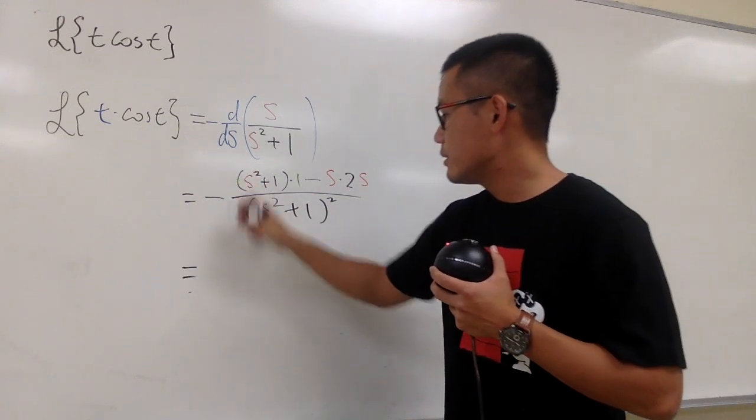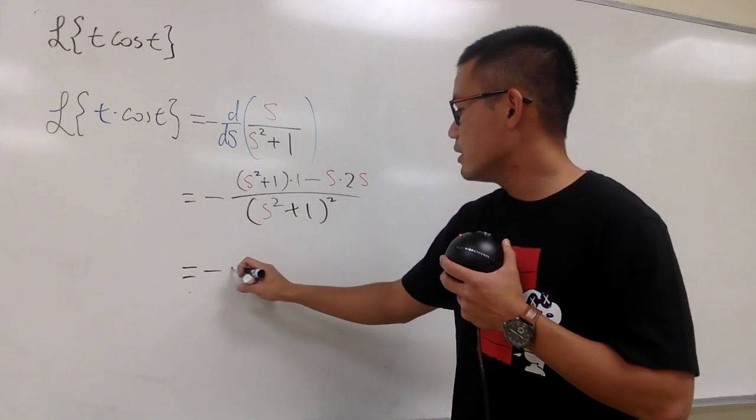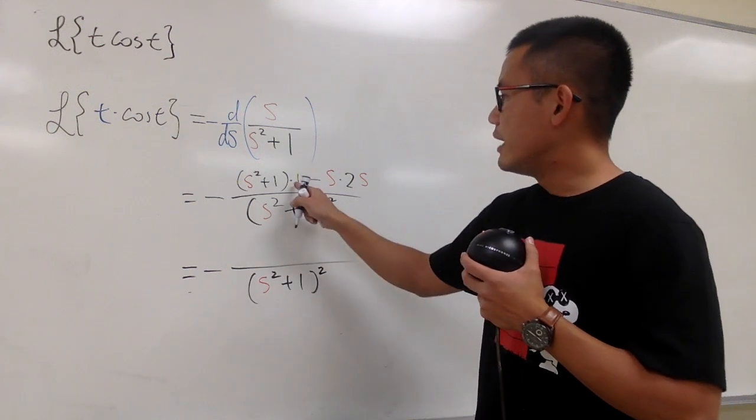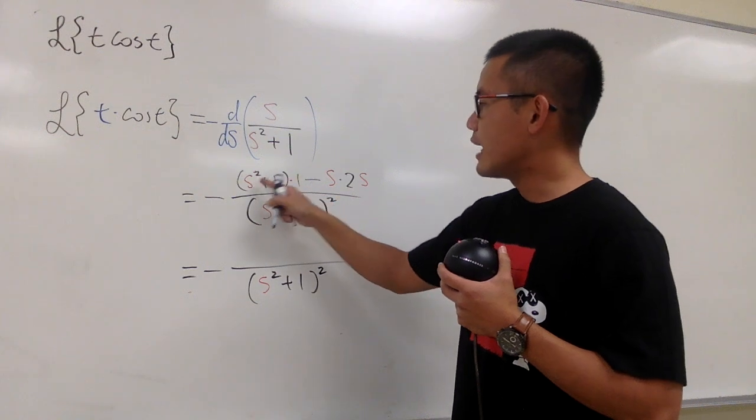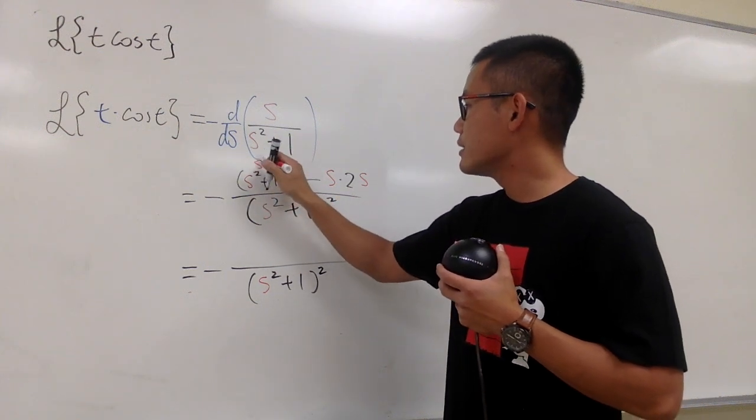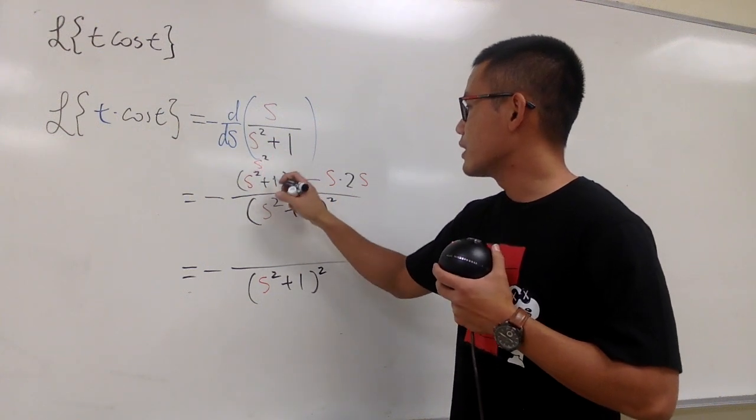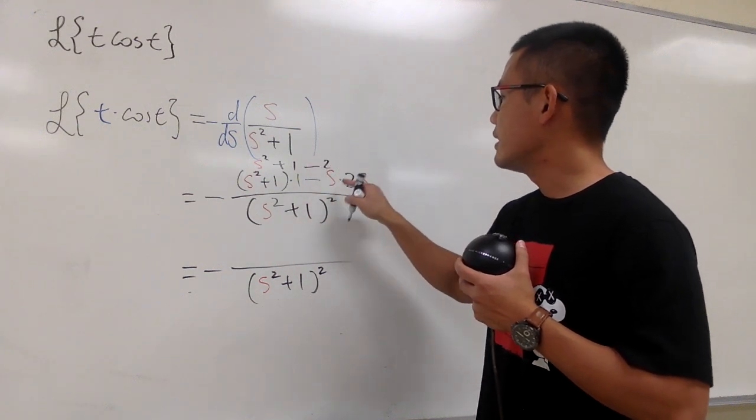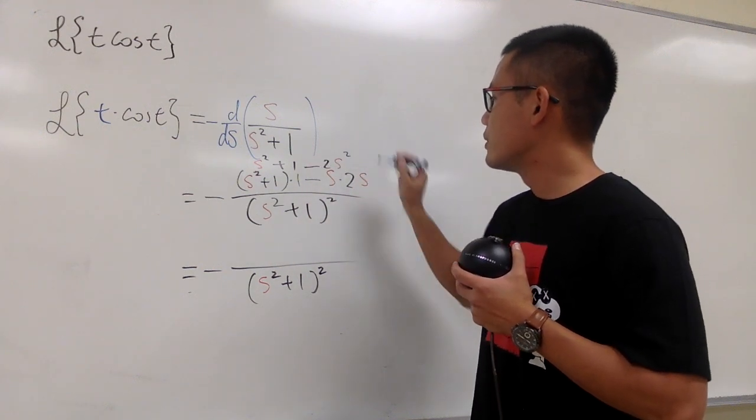If you would like, keep the negative all the way in the front. The bottom is still s squared plus 1 squared. On the top, 1 times s squared is s squared, 1 times 1 is plus 1, and then this is minus 2, and then s times s, which is s squared.